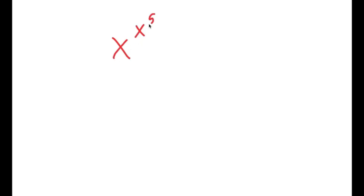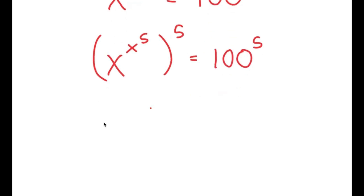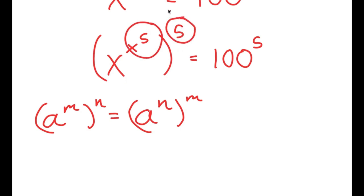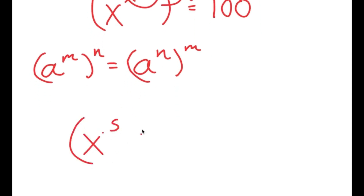In this video, I'm going to solve the equation x to the power of x to the power of 5 is equal to 100. To solve this, I'm first going to take the power of 5 on both sides. Using the property a^(m^n) = a^(n^m), on x^(x^5) to the power of 5, I can think of x^5 as m and 5 as n, so I can switch their places. I get (x^5)^(x^5) is equal to 100 to the power of 5.